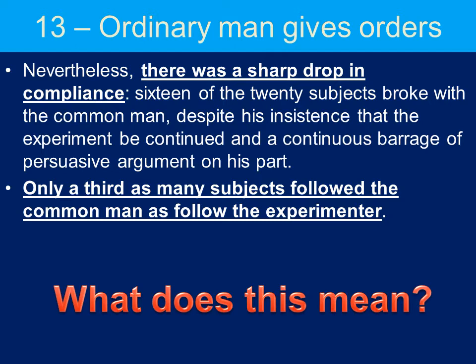There was a sharp drop in obedience levels — 16 out of 20 subjects broke with the common man, meaning they refused to carry on despite his insistence and persuasive arguments. Only a third as many subjects followed the common man as followed the experimenter. From this we can conclude that obedience is tied to authority figures: we are not as likely to obey someone we see as having equal status when what we're being asked to do is a destructive obedience task.